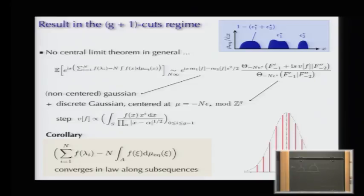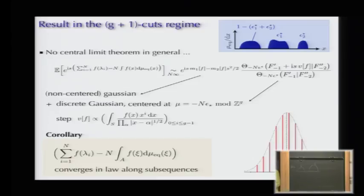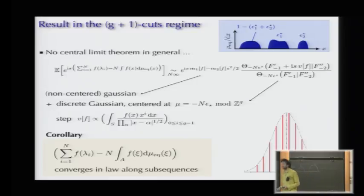The step at which the discrete Gaussian is sampled is a g-dimensional vector proportional to an integral of the test function over the support. So there is a g-dimensional subspace where you do not have a central limit theorem, but on the complementary subspace of co-dimension g (where those integrals are zero), you do have a central limit theorem. Physically, if you think of lambda_i's as eigenvalues of a random Hamiltonian and measurements as linear statistics, you get an interference pattern—the inverse Fourier transform of this Gaussian plus discrete Gaussian.